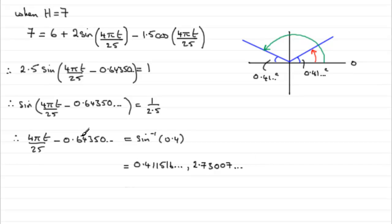Now all we need to do is add 0.64 odd to both of these values, and that will leave us with the 4 pi t over 25. So if we do that, then you'll find that you'll get 1.055016, and so on. And if we add 0.64350 to this value, you'll end up with 3.3735, and so on, radians.